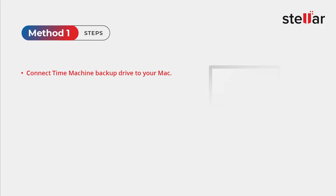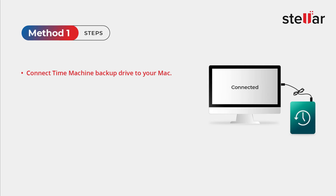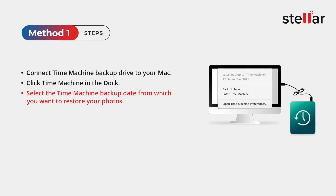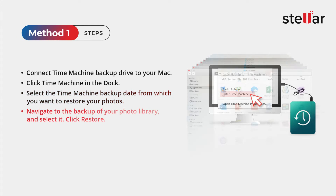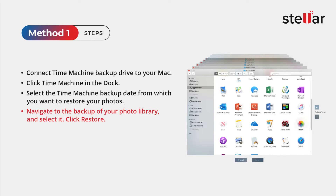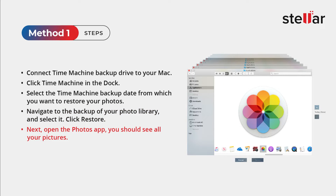Connect the Time Machine Backup Drive to your Mac. Then click Time Machine in the dock. Select the Time Machine Backup Date from which you want to restore your photos. Then navigate to the backup of your photo library and select it. Click Restore. Next, open the Photos app. You should see all your pictures.